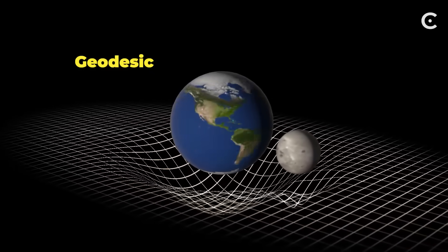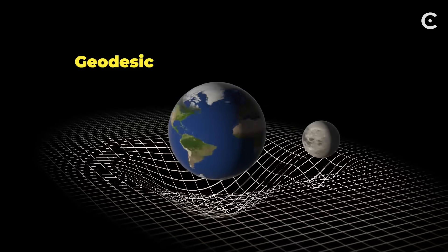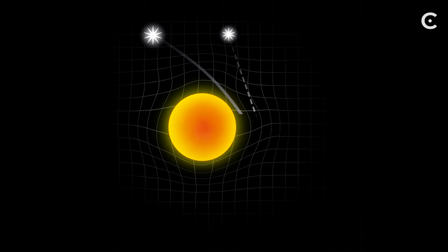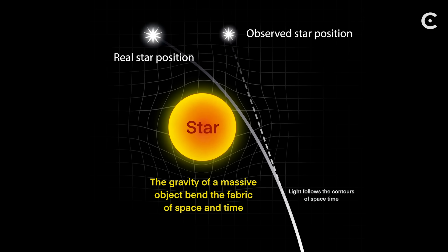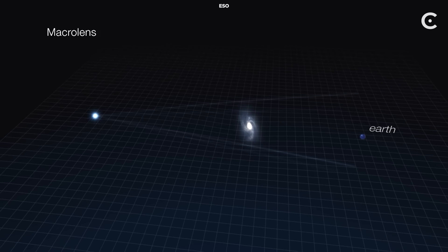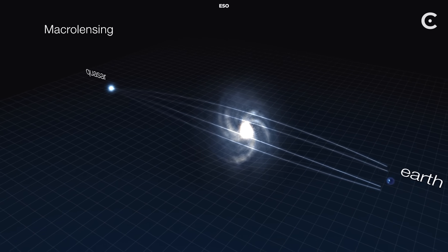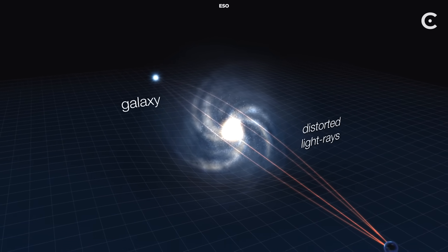What we perceive as the Moon's orbit is actually the Moon traveling in a straight line through warped space. The same thing happens with light. Light always travels in straight lines, but when space-time is curved, those straight lines become curved paths. This is how we get gravitational lensing, where massive objects act like cosmic magnifying glasses, bending light from distant galaxies around them.